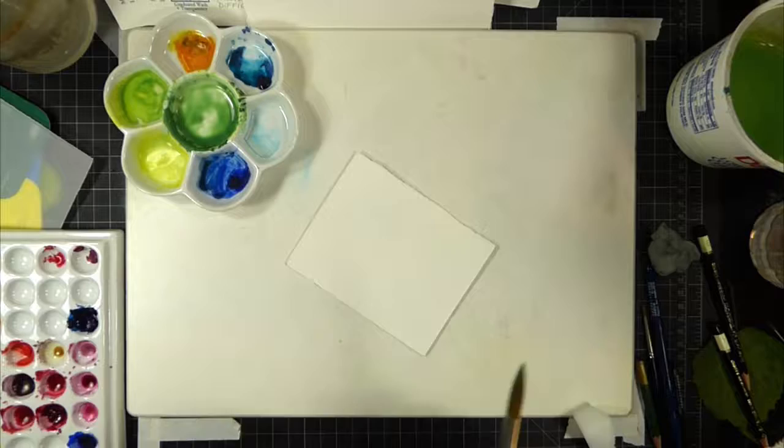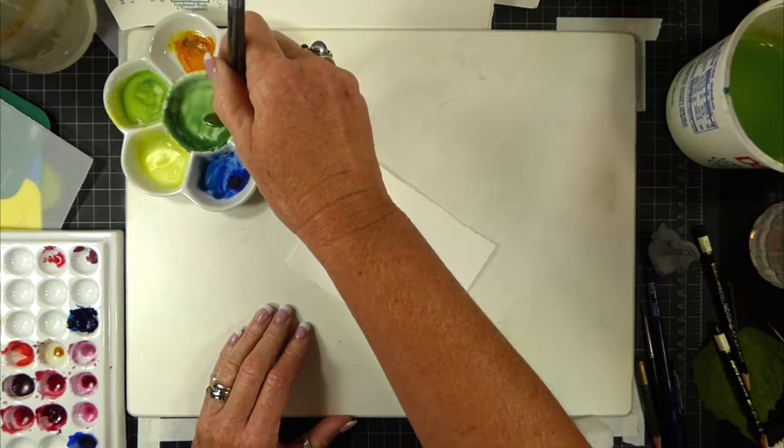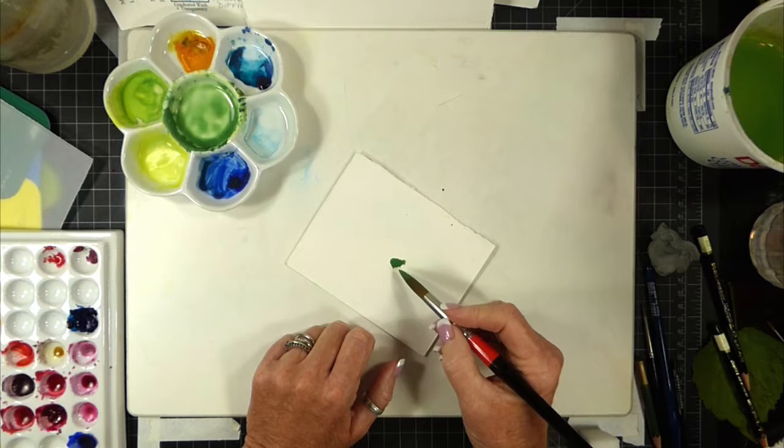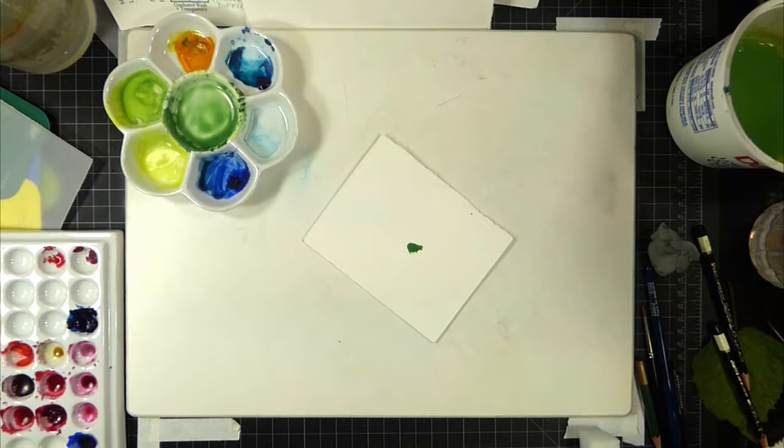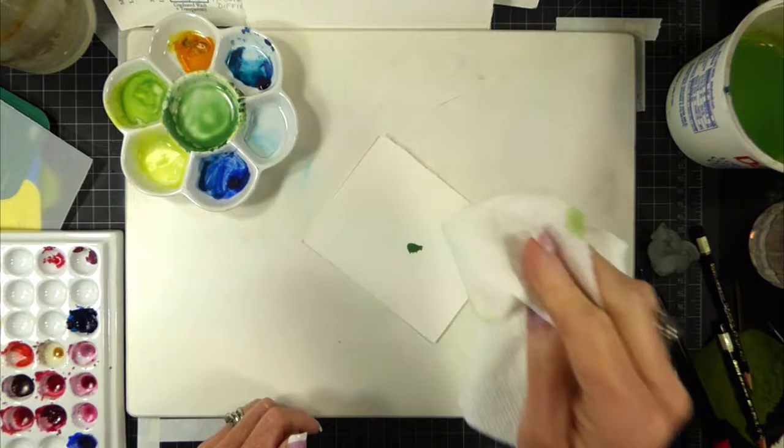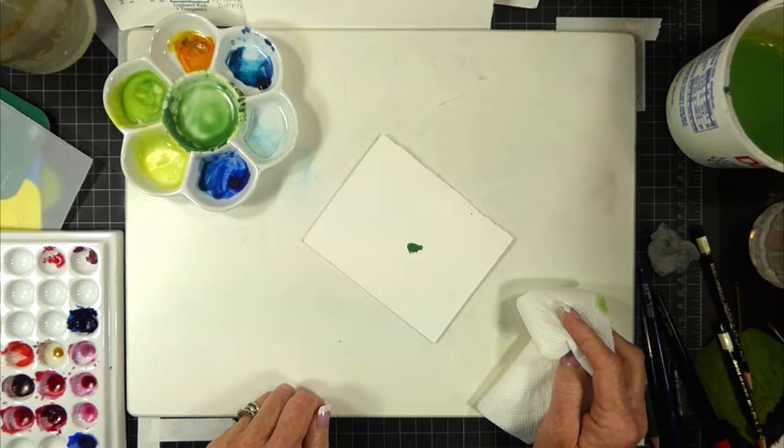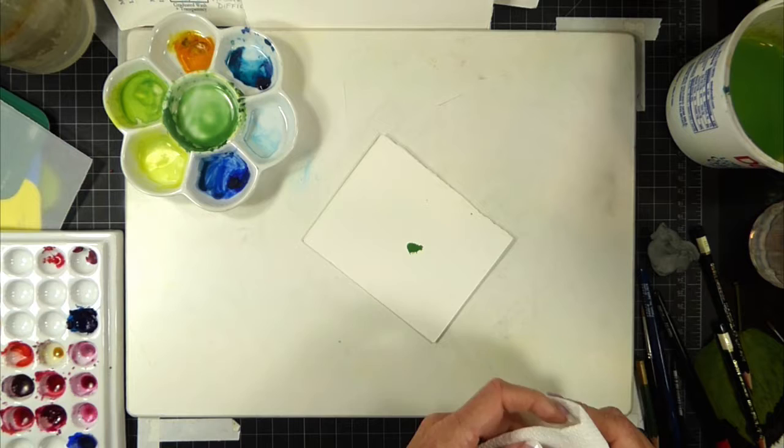One of the worst things that can happen to a watercolor painter is in the middle of a painting, something like this happens where all of a sudden on your beautiful painting you've got a paint splotch. Right now it's wet and if I were to move it I could actually get it to run and drip. The first thing that normally happens is that there's a panic mode and you want to get a paper towel and start pushing really hard. Try to refrain from doing that because what you're actually doing is pushing the pigment further down into your watercolor paper.